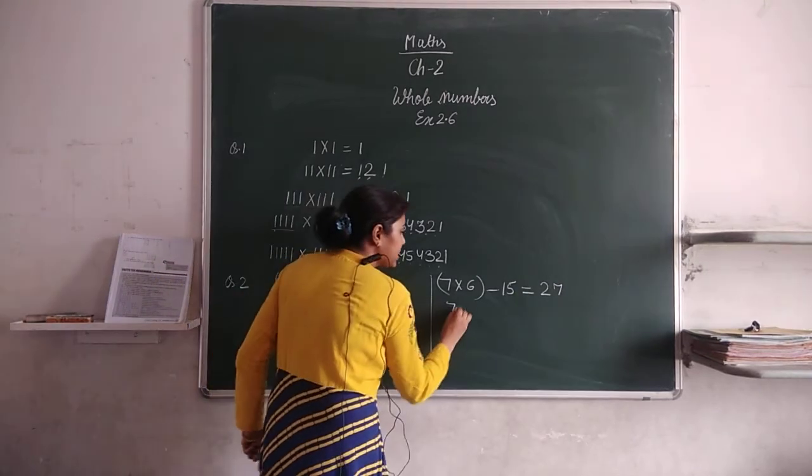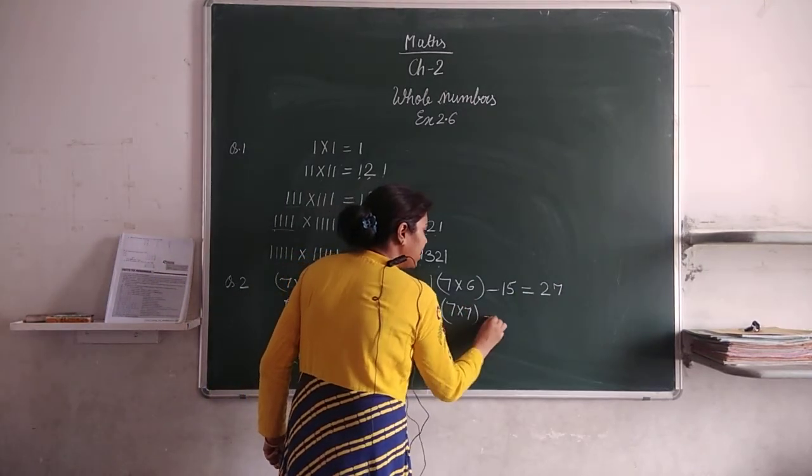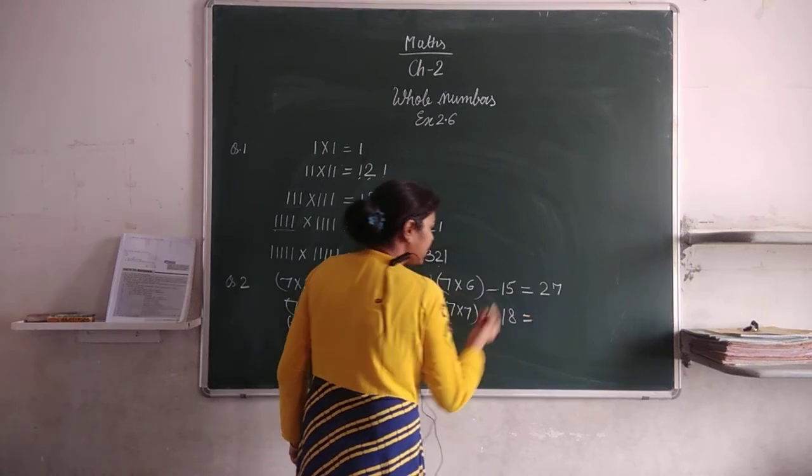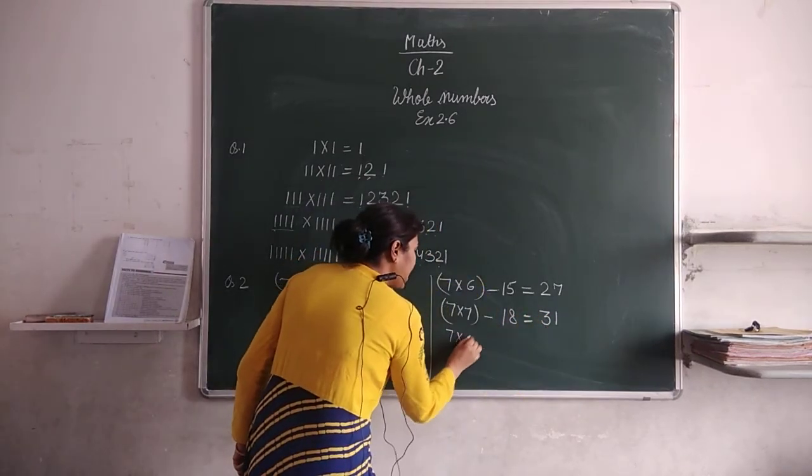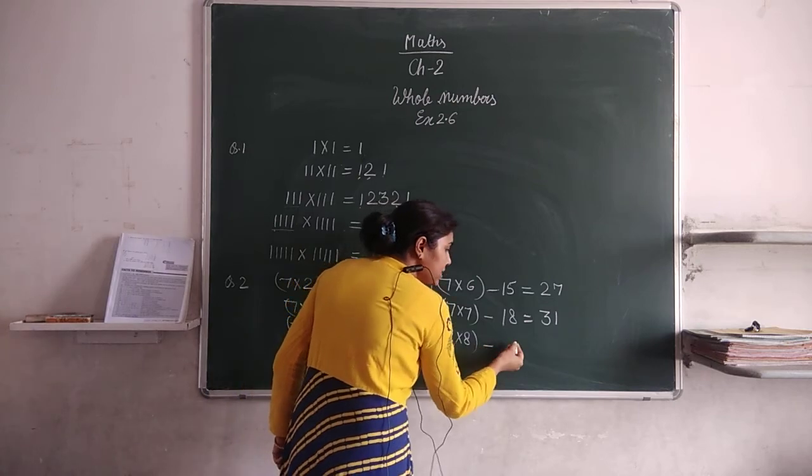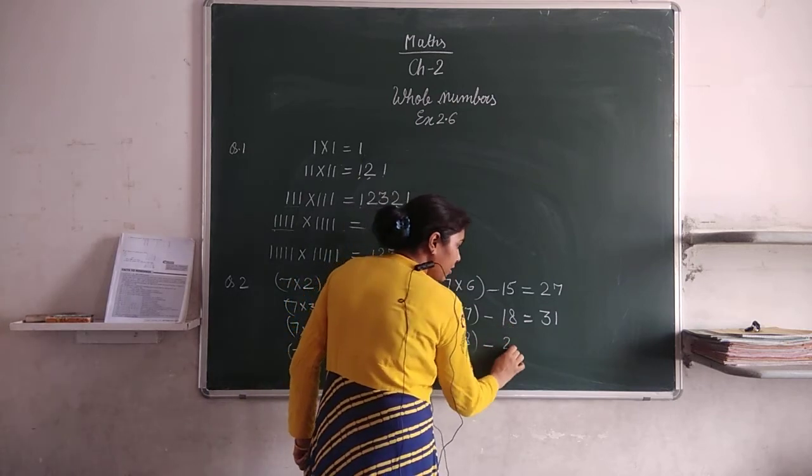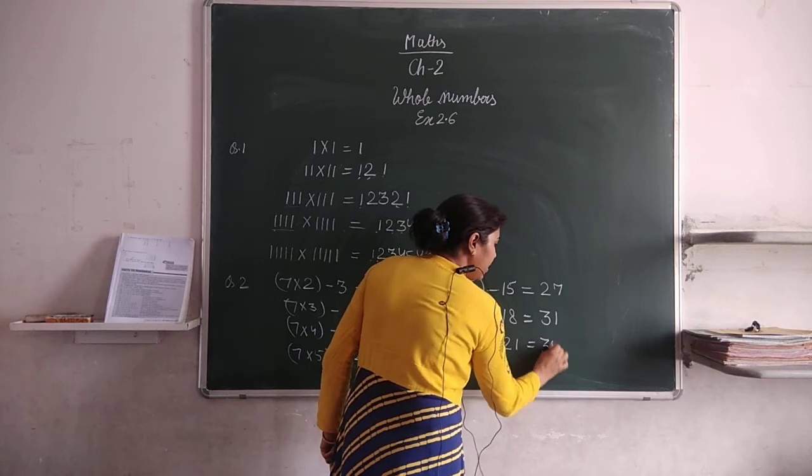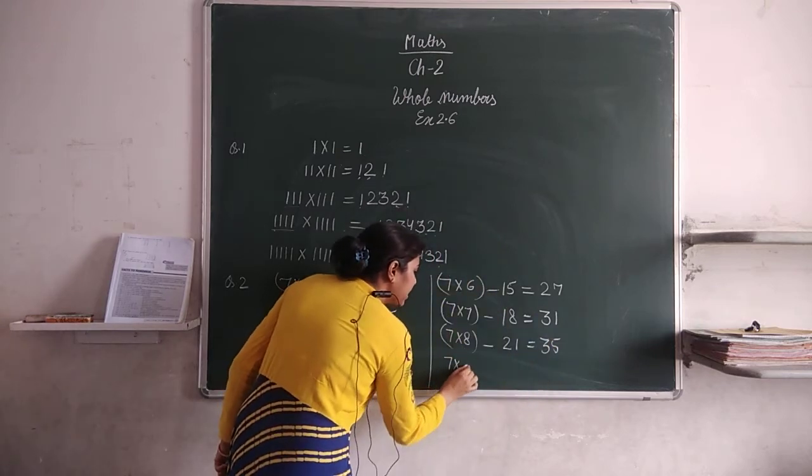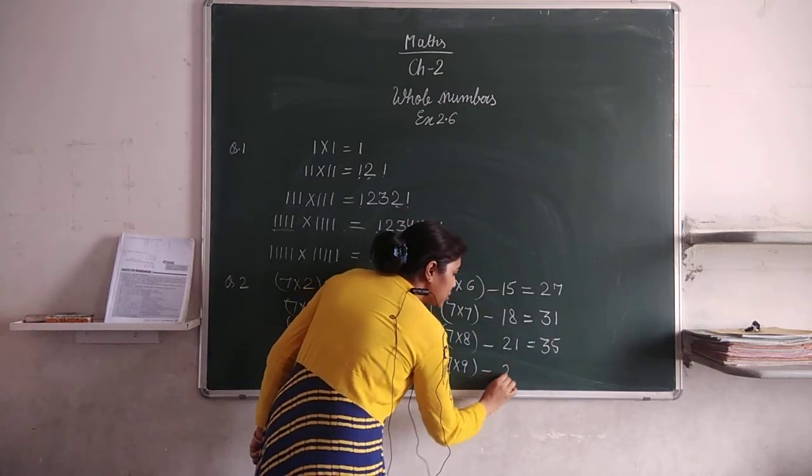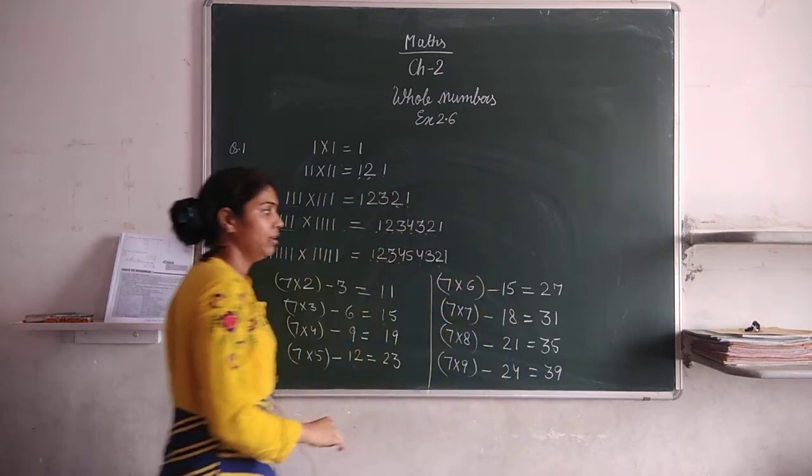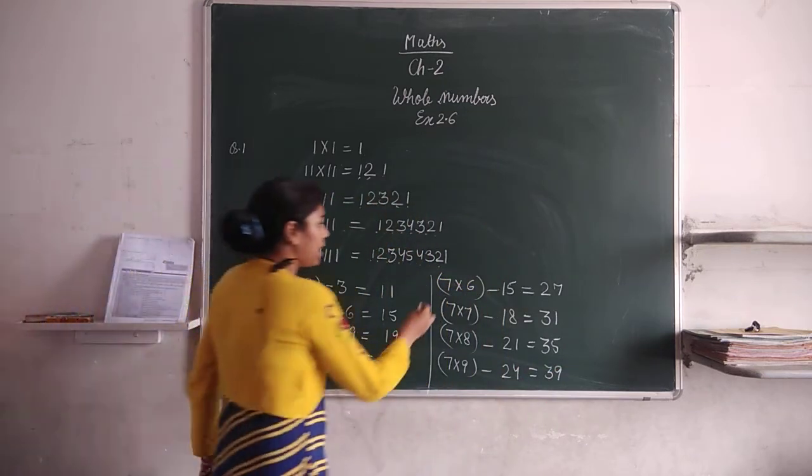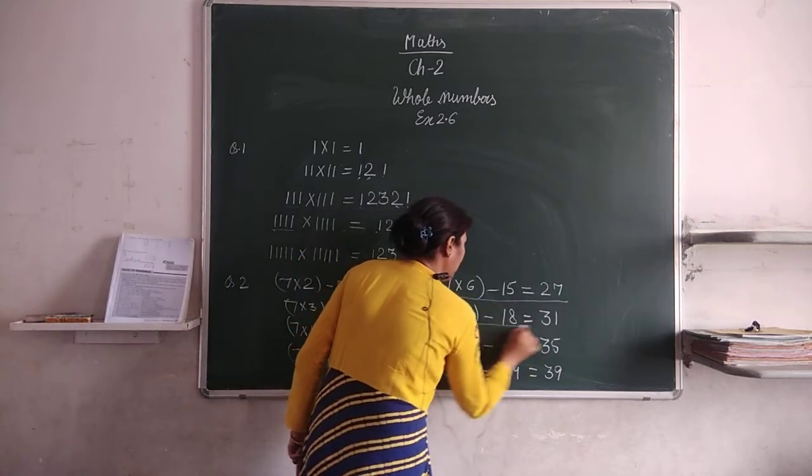Then, next one, 7 into 7 minus 18 is equal to what? 31. 7 multiply by 8 minus then 21 is equal to 35. Then, 7 multiply by 9 minus 24 is equal to 39. These are your 4 steps which you have to write.